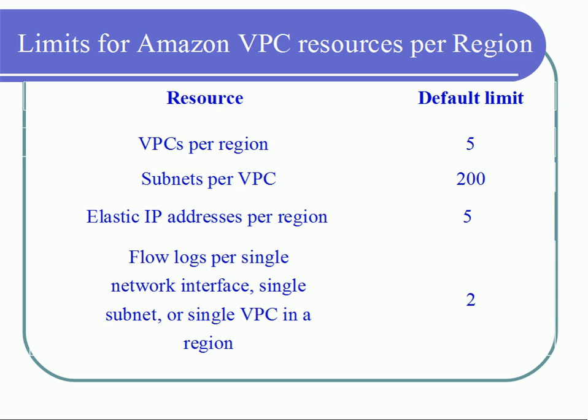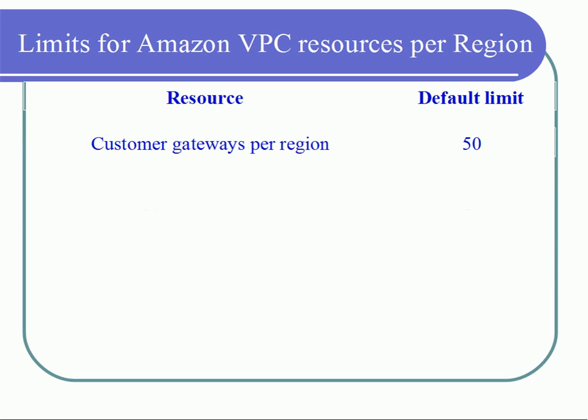Coming to flow logs — by default, per VPC, you can have 2 flow logs configured for a single network interface card, a single subnet, or a single VPC in a region.